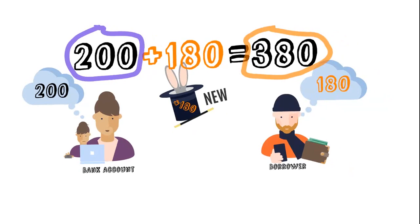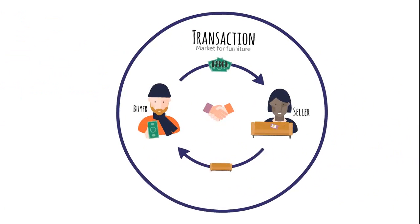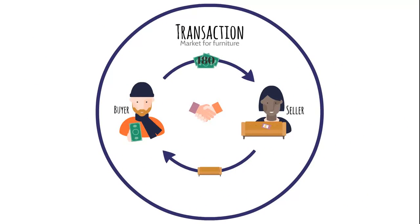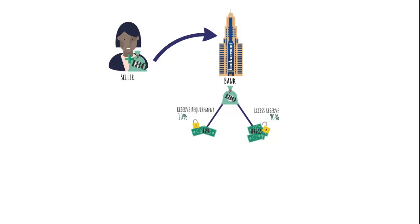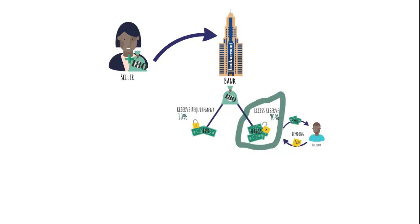Don't think that this is illegal or bad — this is part of the process of creating credit. Our friend can now buy, for example, a new sofa with his 180€. The seller of the sofa can decide to deposit her 180€ in the bank as well, from which 90% — 162€ — may be lent to another person, and the cycle starts again.